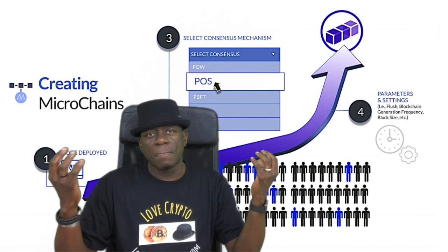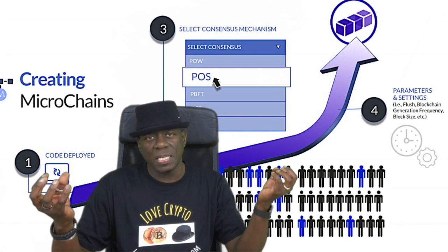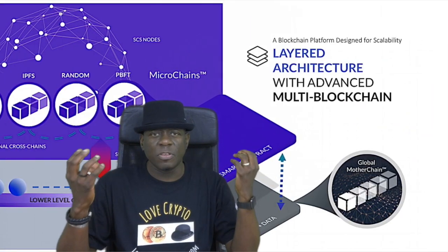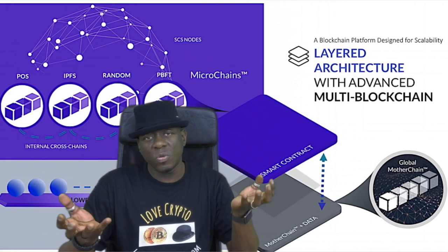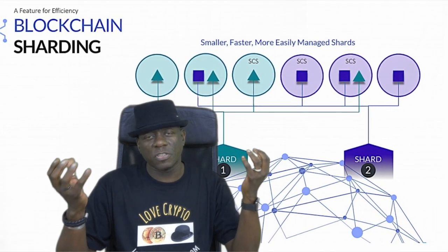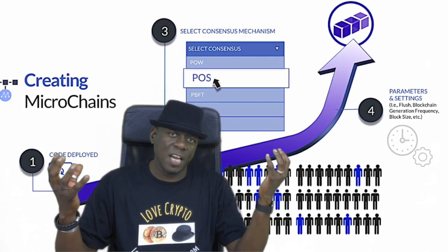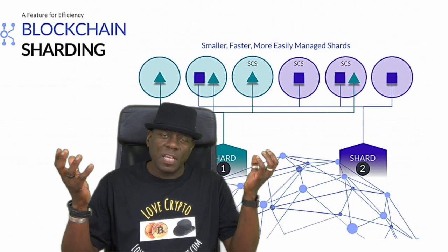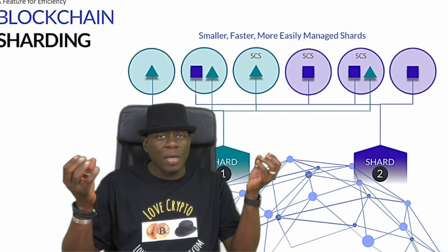The MOAC platform assigns a micro chain for each smart contract to increase scalability and efficiency. Micro chains separate processing tasks from business logic, and enable the use of various consensus protocols, so developers can pick the one that best fits their project's use case. MOAC uses sharding to horizontally partition data across multiple nodes and blockchains. Developers can specify the number of shards for each smart contract, and sharding enables the platform to scale effectively while increasing transactions per second by extending the number of nodes on the network.